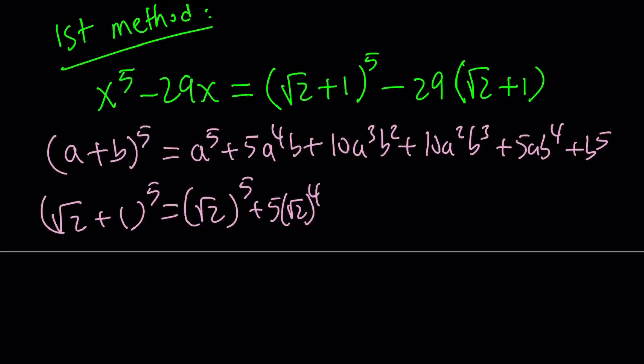b is 1, so we can totally ignore the values of b. Plus 10(√2)^3 + 10(√2)^2 + 5√2 + 1. Since b is 1, b to the 5th power is also 1.